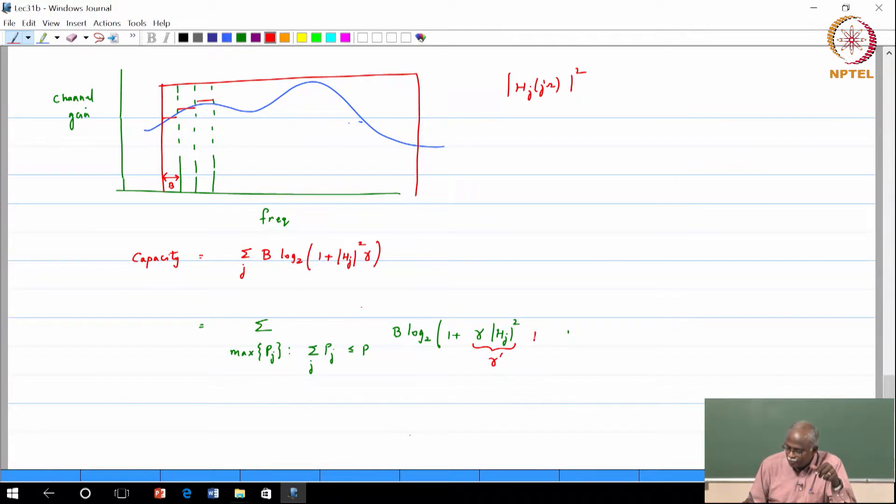This multiplied by P J divided by P. This is my optimum power allocation and the constraint would be that sigma J, P J less than or equal to P. So this is a quantity that will be less than, will be a ratio which we can adjust.